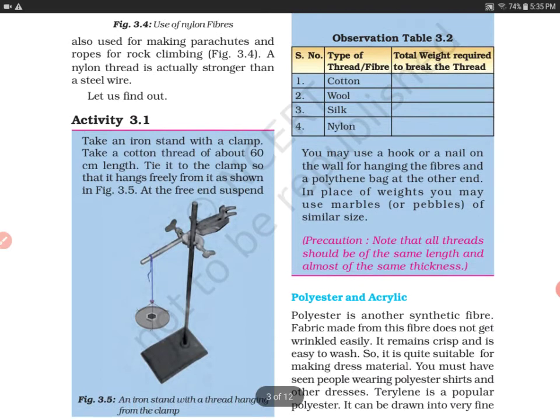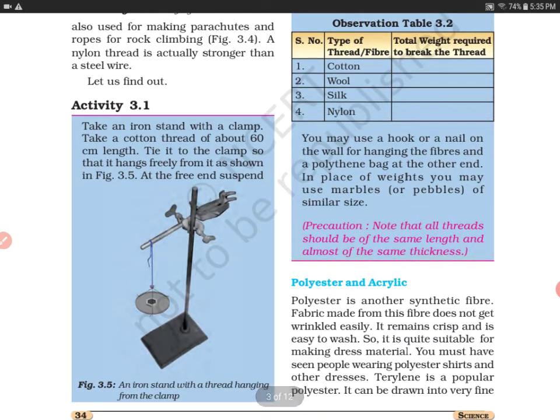In this activity, you are supposed to take an iron stand with a clamp, as shown in Figure 3.5. Take a cotton thread of about 60 centimeter length. Tie it to the clamp so that it hangs freely, as shown in the figure.